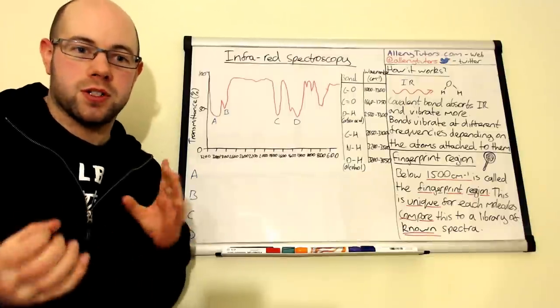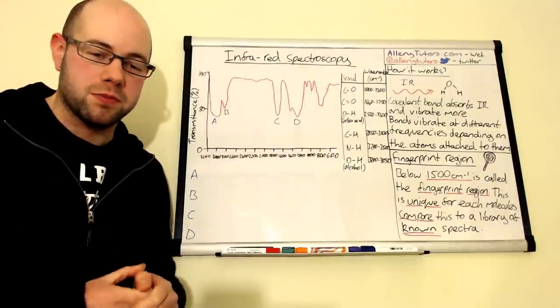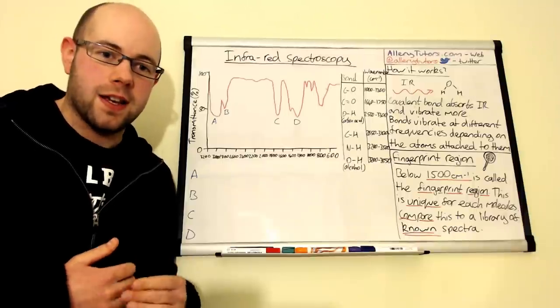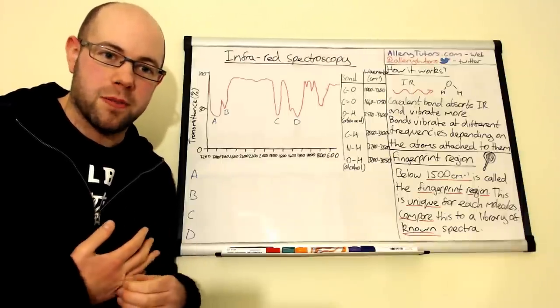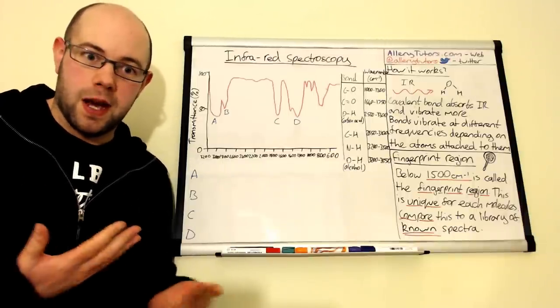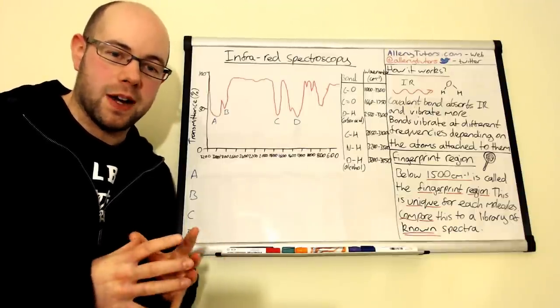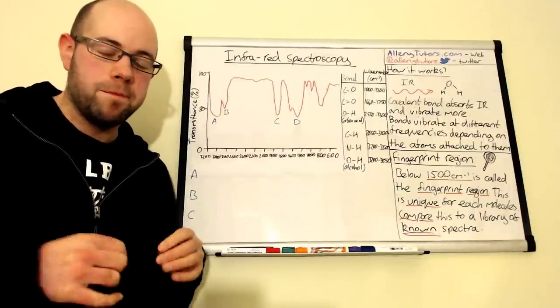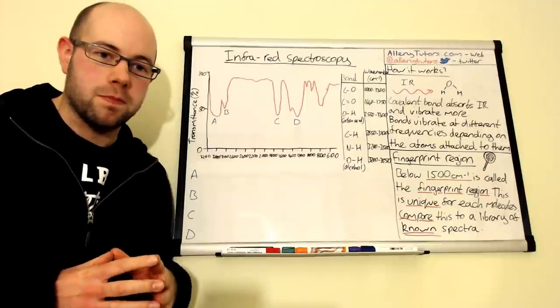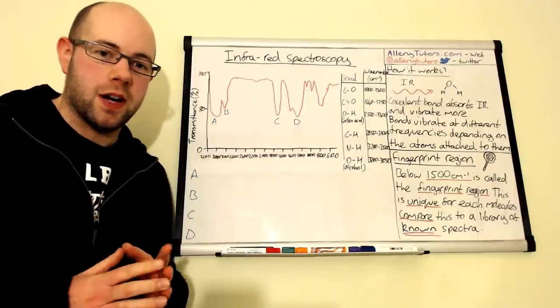Now depending on what's attached either side of that bond will depend on how quick that bond will oscillate or vibrate. And from that we can work out bonds and types of atoms that are in our molecule, and we can use this to possibly help identify a molecule fully.